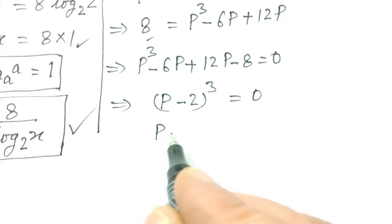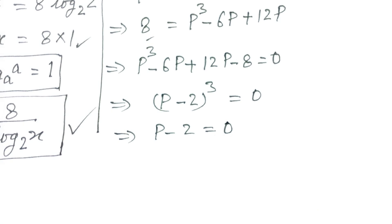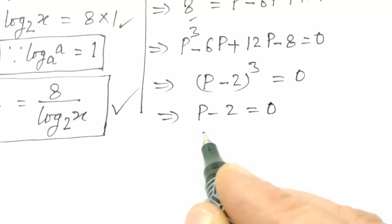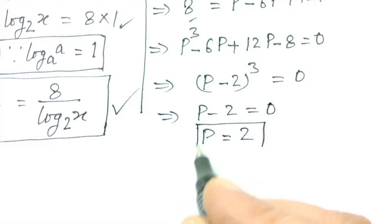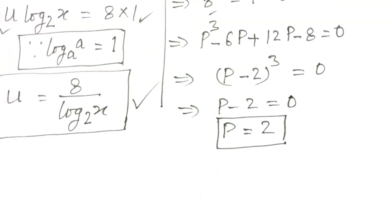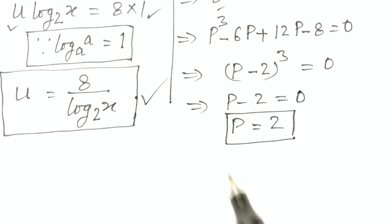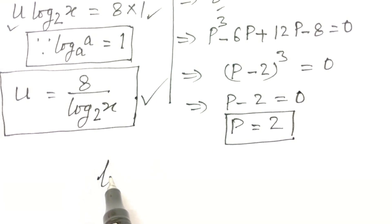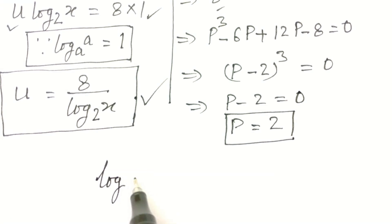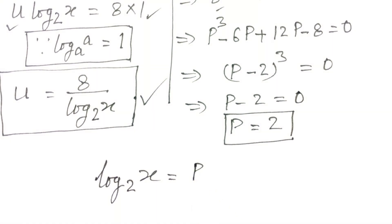This is the expression of p minus 2 whole cube, equal to 0. So p minus 2 is equal to 0, therefore p is equal to 2. As we assumed log of x to the base 2 equals p, so p equals 2.